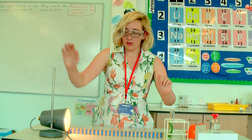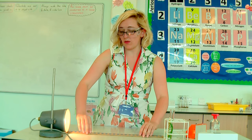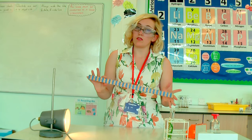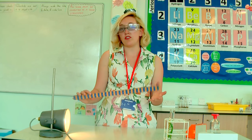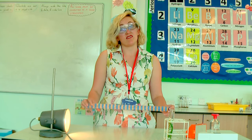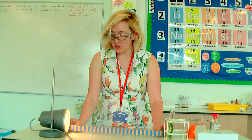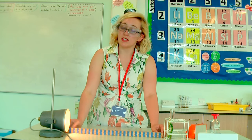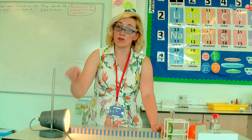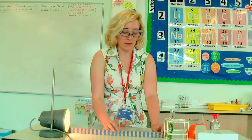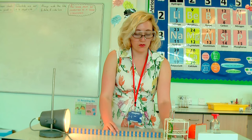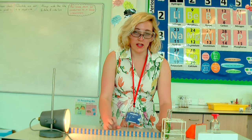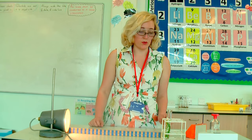I've also got my lamp here and I've got my 50 centimetre ruler. You can use a 30 centimetre or a metre ruler — it doesn't really matter. I use this to measure the distance from the light bulb inside the lamp to the pondweed in its boiling tube.